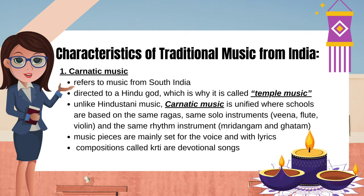Characteristics of traditional music from India. 1. Carnatic music refers to music from South India. It is directed to a Hindu god, which is why it is called temple music. Unlike Hindustani music, Carnatic music is unified where schools are based on the same ragas. Same solo instruments — veena, flute, violin — and the same rhythm instrument, mridangam and ghatam. Music pieces are mainly set for the voice and with lyrics.